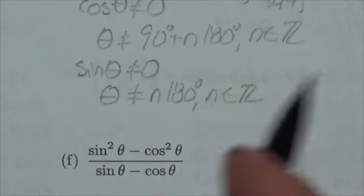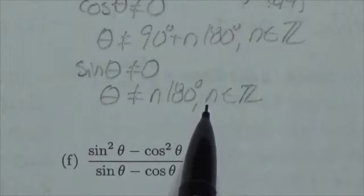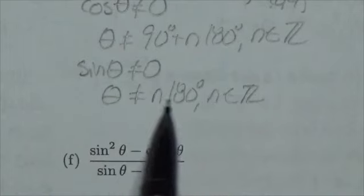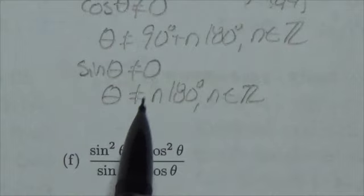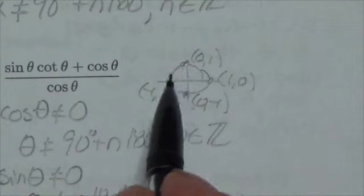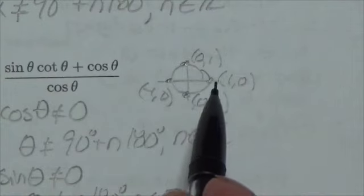In this case, if n is an element of the integers, n could be zero, so theta can't equal zero. Then it's any multiple of 180 that we desire: 1 times 180, 2 times 180, and we bounce back and forth between those two points.